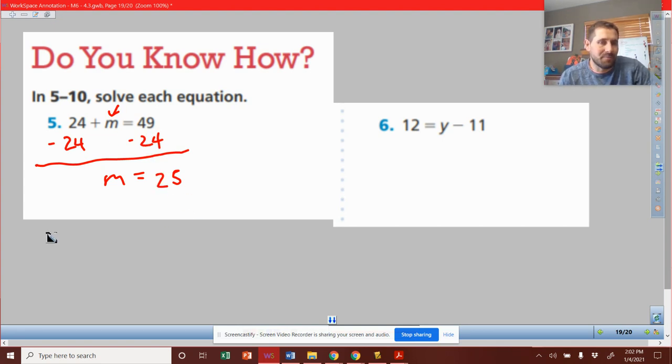How can I check it? I can go back to the original problem. Instead of putting an m, I could put 25, and then 24 plus 25 is 49, so I get 49 equals 49. It's good.